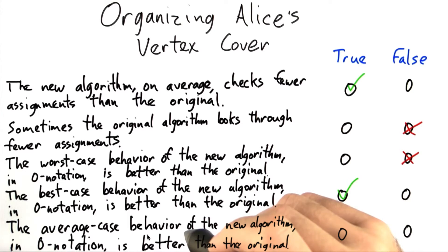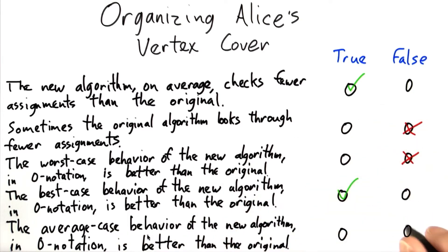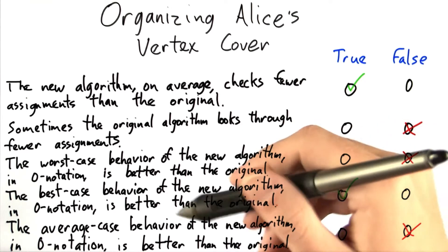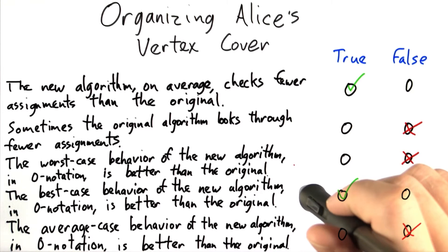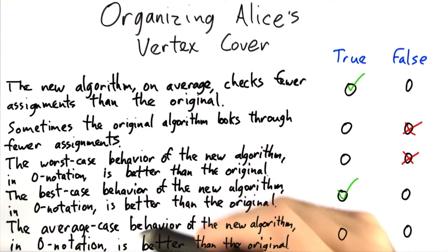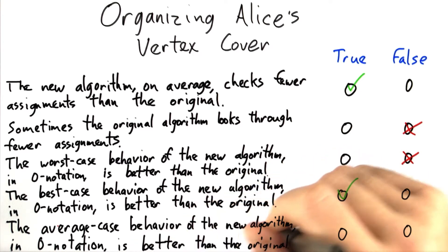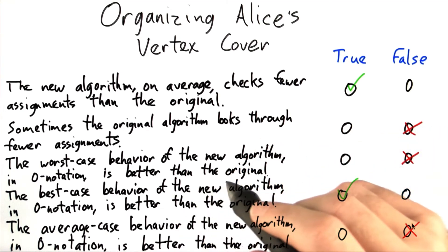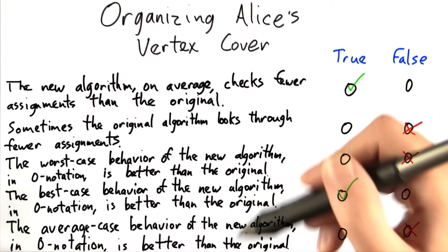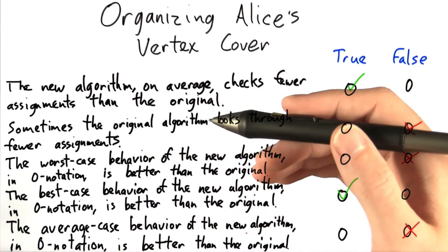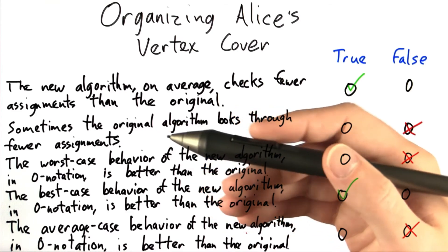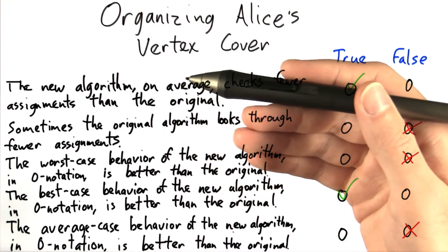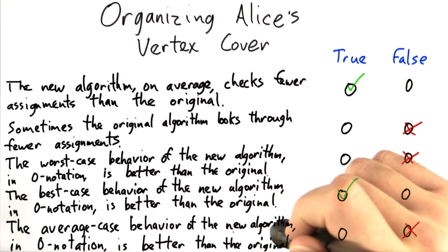What about the average case? How can we expect the new algorithm to behave on average? The new algorithm isn't on average asymptotically better than the original algorithm, because it may have to check through just as many assignments. This last question is tricky: is the average-case behavior of the new algorithm better asymptotically compared to the original? This is actually false. On average, the new algorithm is still going to have to check through at least half of all possible assignments, and there are exponentially many different assignments to the graph. Half of an exponential number of assignments is still exponential. So on average, the behavior of the new algorithm is still exponential, which is just as bad as the original.